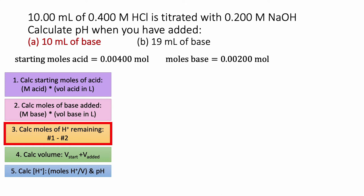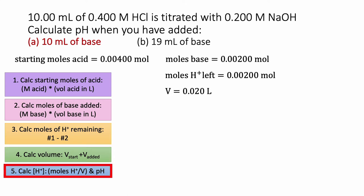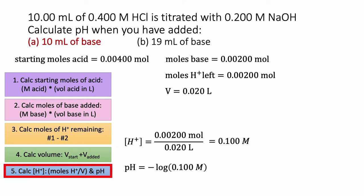Step three: calculate the moles of H+ left in the flask. We take the moles of acid we started with and subtract the moles of base added: 0.004 minus 0.002 = 0.002 moles of H+ remaining. Step four: total volume is 0.010 liters plus 0.010 liters = 0.020 liters. Step five: H+ concentration = 0.002 moles divided by 0.020 liters = 0.100 molar. pH = negative log of 0.100 = 1. So even after adding a bunch of base, this solution is still pretty acidic.